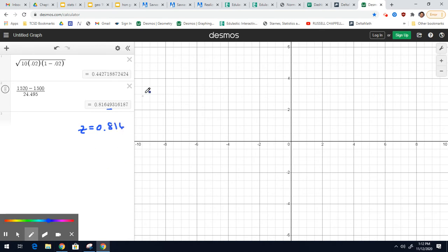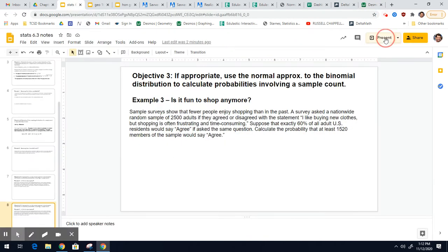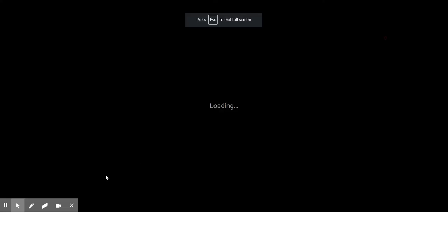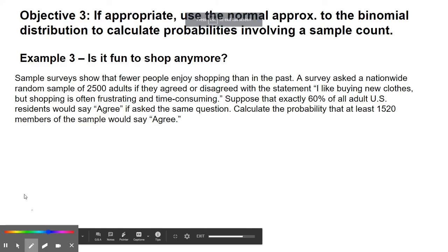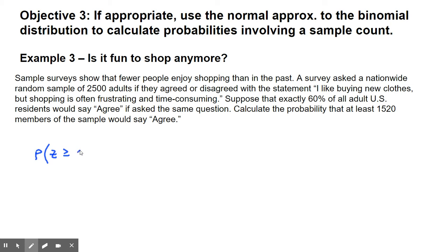So when I come back into the notes here, I'm going to change my probability of x into probability of z is greater than or equal to, and our value was 0.816.